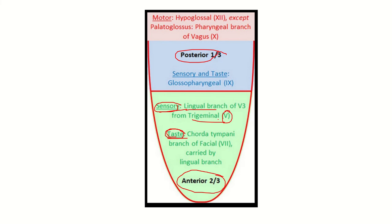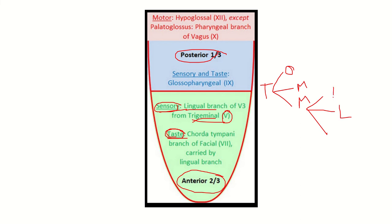The general sensation — meaning pain, temperature, touch, and other sensation — of the anterior two-thirds of the tongue is carried by the lingual branch. The lingual branch is a branch of the mandibular nerve, which is a branch of the trigeminal nerve. The trigeminal nerve gives three branches: ophthalmic, maxillary, and mandibular. The mandibular nerve also gives three branches, one of which is the lingual nerve, along with the auriculotemporal and inferior alveolar nerves.